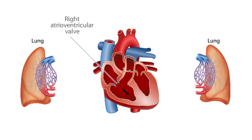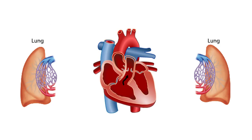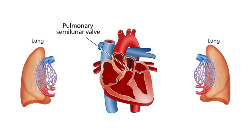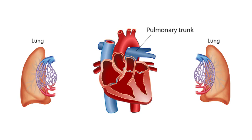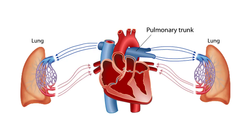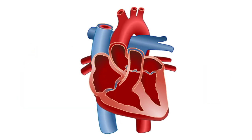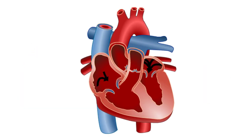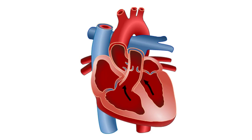Blood passes out of the contracting right ventricle through a second valve, the pulmonary semilunar valve, into a single pulmonary artery, sometimes called the pulmonary trunk, which subsequently branches into arteries that carry deoxygenated blood to the lungs. The blood then returns from the lungs to the left side of the heart, replenished with oxygen and cleared of much of its load of carbon dioxide. The pumping of the heart is a repeated cardiac cycle of relaxation and contraction of the atria and ventricles.